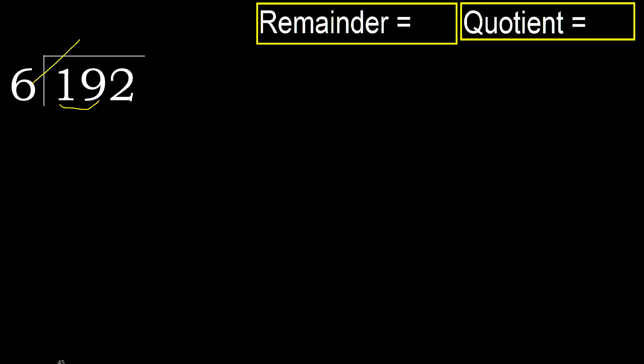6 multiplied by which number is nearest to 19 but not greater? 6 multiplied by 4 is 24, 24 is greater. 6 multiplied by 3 is 18, 18 is not greater. 19 minus 18 is 1.